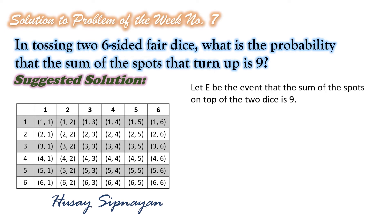Let E be the event that the sum of the spots on top of the two dice is 9. Then we have the event (6, 3) — that means 6 spots on one die and 3 on the other. Another is (5, 4) — 5 spots on top of one die and 4 on the other. We also have (4, 5) and (3, 6).